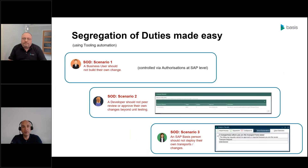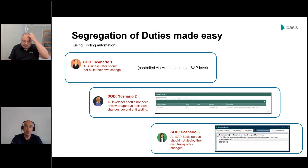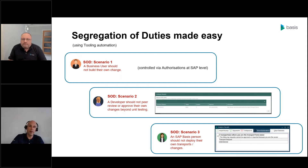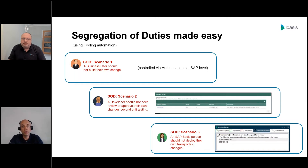Ultimately this is really how automation and tooling can help. With tooling you can help to enforce the rules to make sure that a business user can't be the person that makes their own change, or a developer can't peer review their own change. Tooling can really help to enforce that segregation of duties within the delivery of SAP change.